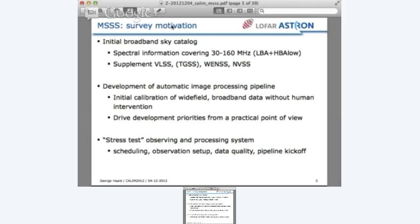We're doing the survey for a few reasons. First is we want to have a broadband low-frequency all-sky catalog with spectral information from all the bright sources in the sky between 30 and 160 megahertz, which will supplement VLSS, WENSS, and the TGSS, which is the GMRT 150 megahertz survey. They're starting in the south and moving northward. The point is for our survey to cover this whole range, and we do that in two shots.